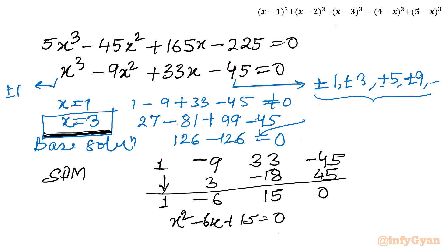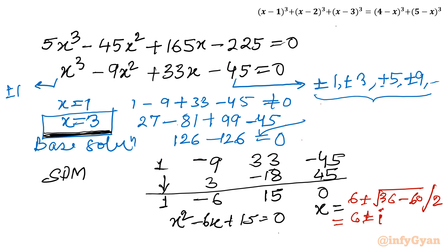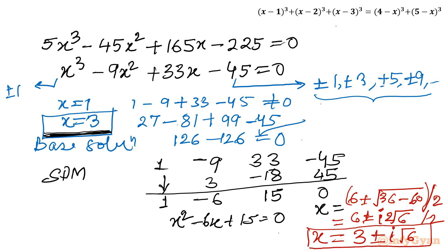Applying the quadratic formula: x = [6 ± √(36 − 60)] / 2 = [6 ± √(−24)] / 2. Since the discriminant is negative, complex solutions arise. We get x = [6 ± i√24] / 2 = [6 ± 2i√6] / 2 = 3 ± i√6. So the three solutions for this cubic equation are: x = 3 (real solution) and x = 3 ± i√6 (two complex solutions).